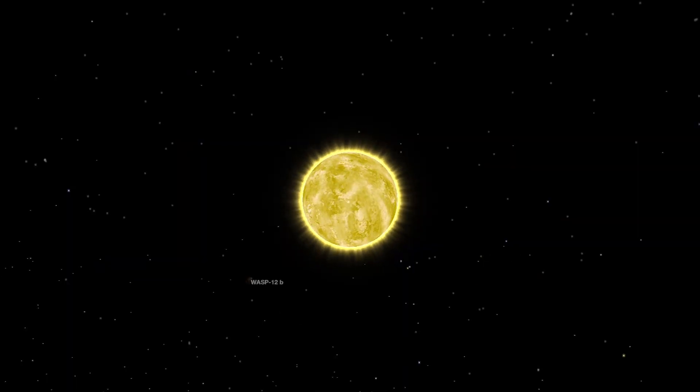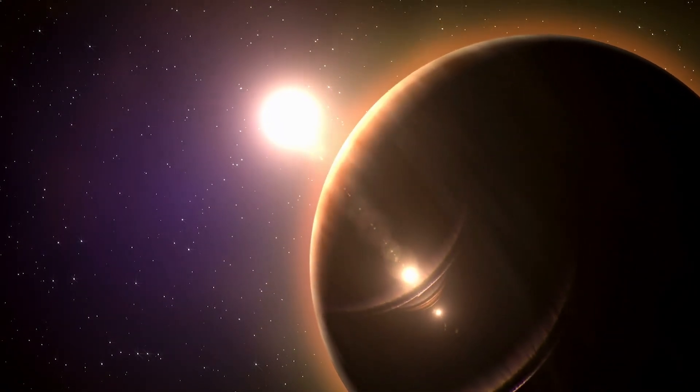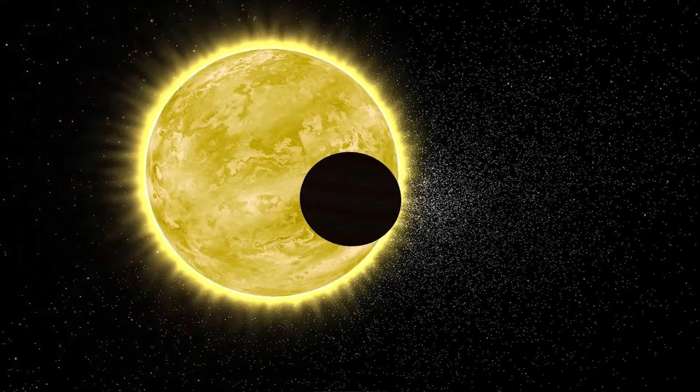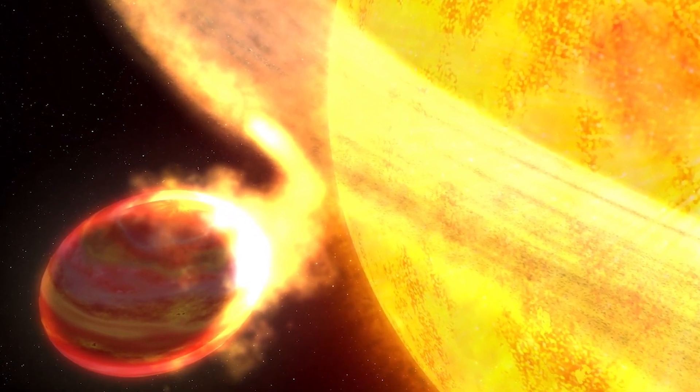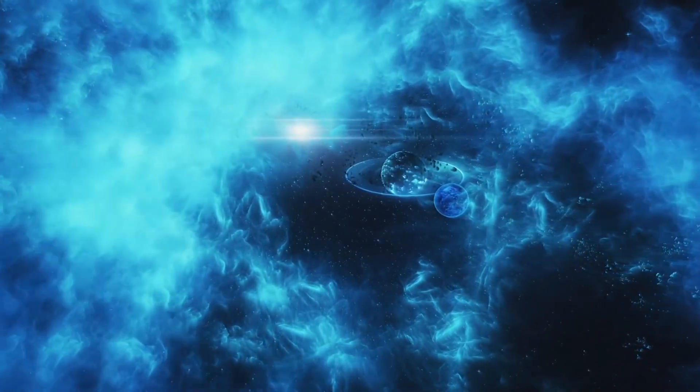But of course, by that point, it would cease to be a blue marble. It will look kinda like how Venus looks to us now. Expansion and Collision. But wait, if everything is moving away from everything else due to the expansion of the universe, how can Andromeda be getting closer?